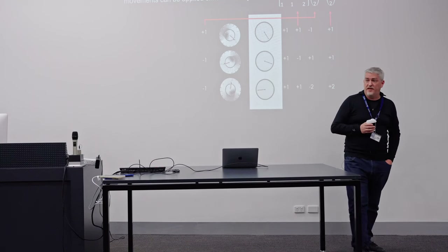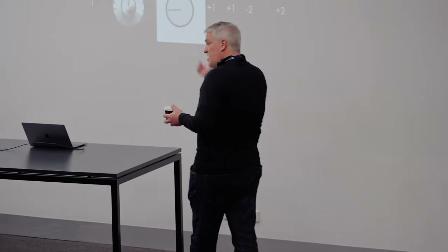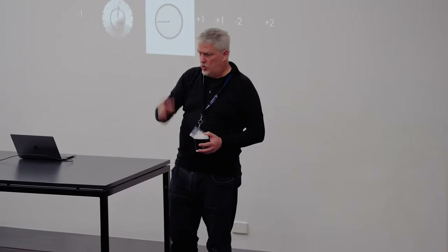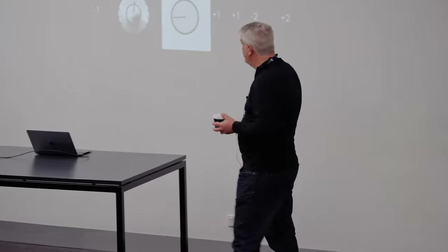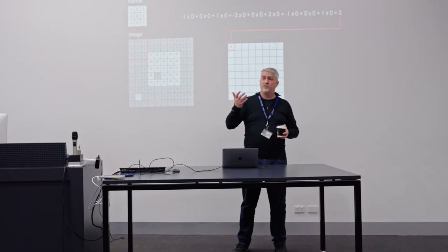Sometimes we have fewer knobs than dials — I can only control a couple of knobs but I've got lots of dials, so I've got no hope of getting them all where I want them to be. Often we say we want the sum of the squared errors to be minimized. Sometimes it's the other way around: more knobs than dials. Then I've got lots of ways of twiddling the knobs to make the dials move, and typically I want to make the smallest adjustment to all of the knobs to get the dials to where they need to go. That's the situation we find ourselves in in deep learning.